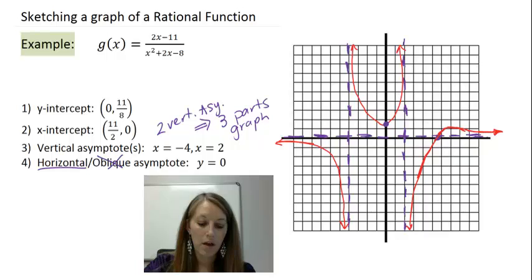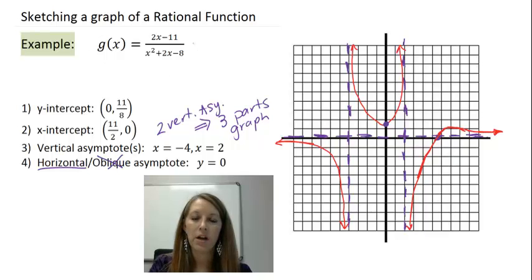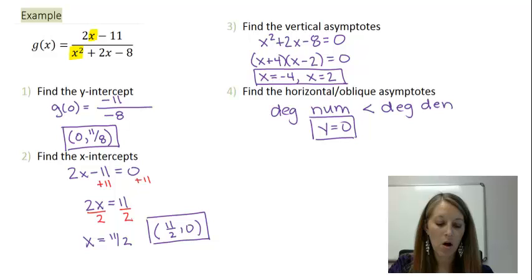So, that means this red graph here is the official graph of my g of x there. We have come up with a sketch of this graph by using all of the individual information that we learned from here.